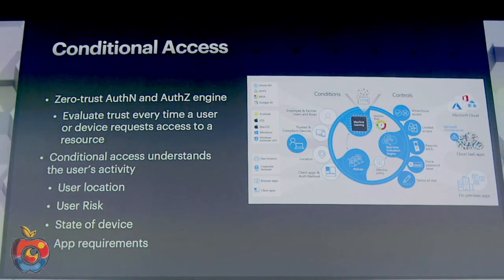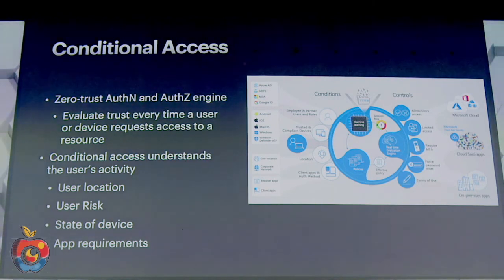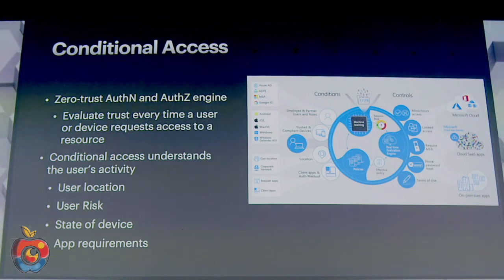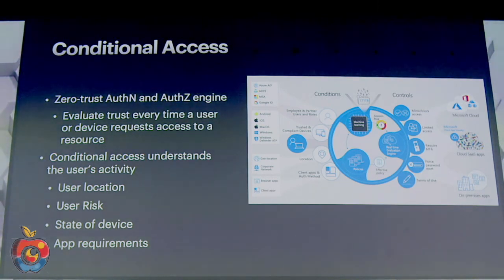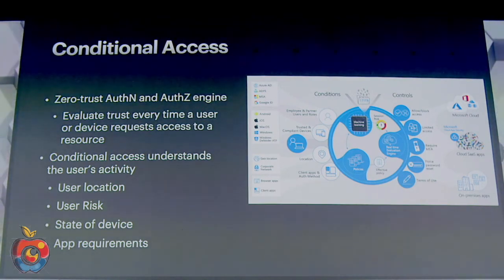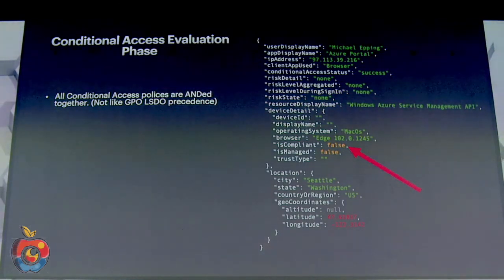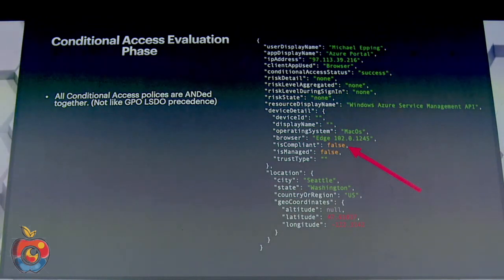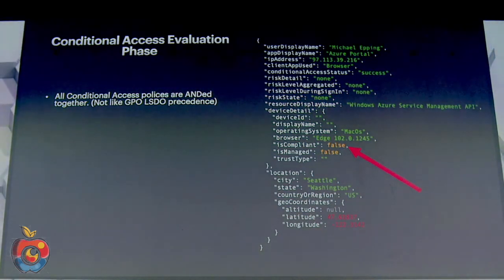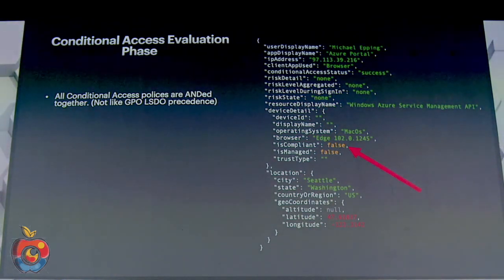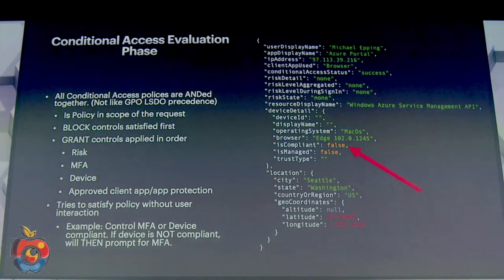We have integrations with lots of devices and we strive to evaluate trust every time a user or device requests access to a resource — constantly checking whether to intervene. Administrators create Conditional Access policies, which are essentially big chunks of JSON, where you define conditions and decide what controls to apply. If any policy says a user should be blocked, they'll be blocked.